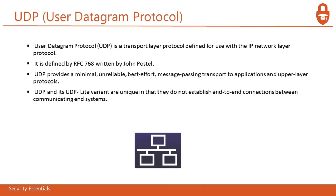Next is User Datagram Protocol, or UDP. UDP is a transport layer protocol defined for use with the IP network layer protocol, defined by RFC 768 written by John Postel. UDP provides a minimal, unreliable, best-effort message passing transport to applications and upper layer protocols. UDP and its UDP Lite variant are unique in that they do not establish end-to-end connections between communicating systems.